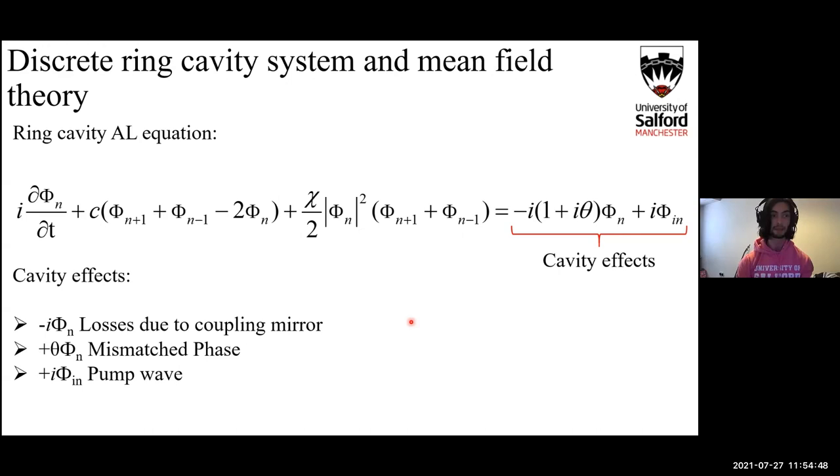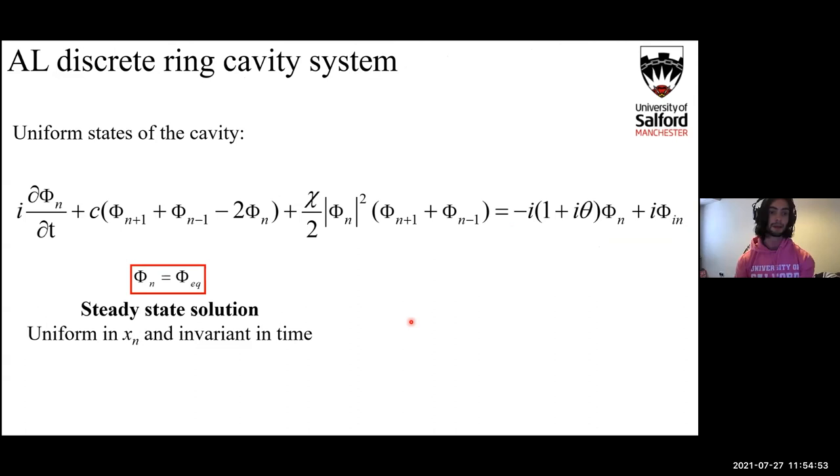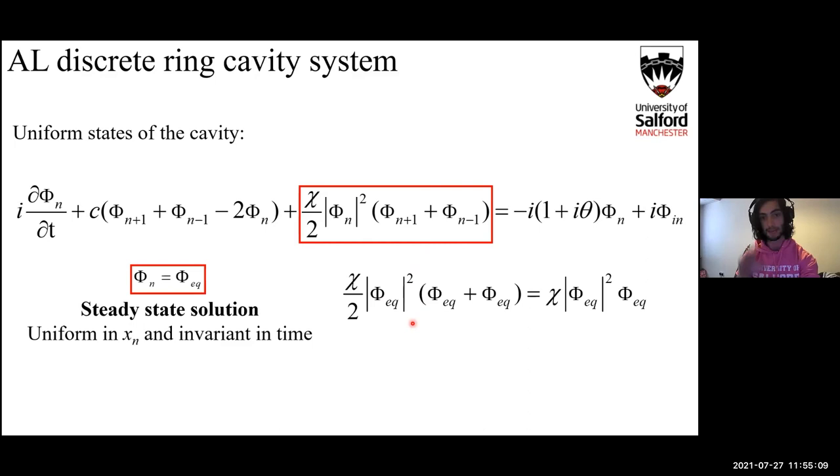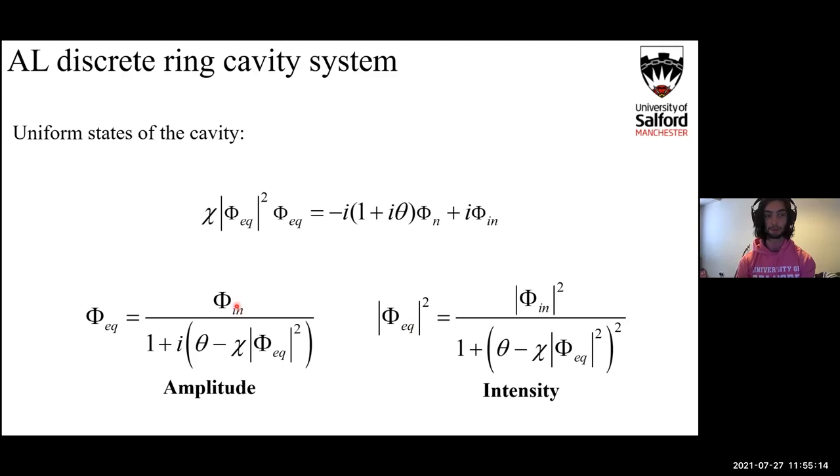We're going to look for uniform steady-state solutions of this. What we're going to look for are ones that are completely invariant in space and time, so what that means is this term when it clips in it goes to zero, so does this one, and this term reduces as follows. If we take those three terms and put it all into the Ablowitz-Ladik, we form this equation which allows us to form two separate equations: one for the amplitude of the wave and one for the intensity.